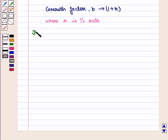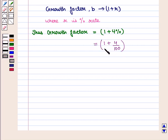Thus we can say that growth factor is equal to 1 plus R, which is given as 4%, which equals 1.04. So, base B or growth factor B is equal to 1.04. Therefore,